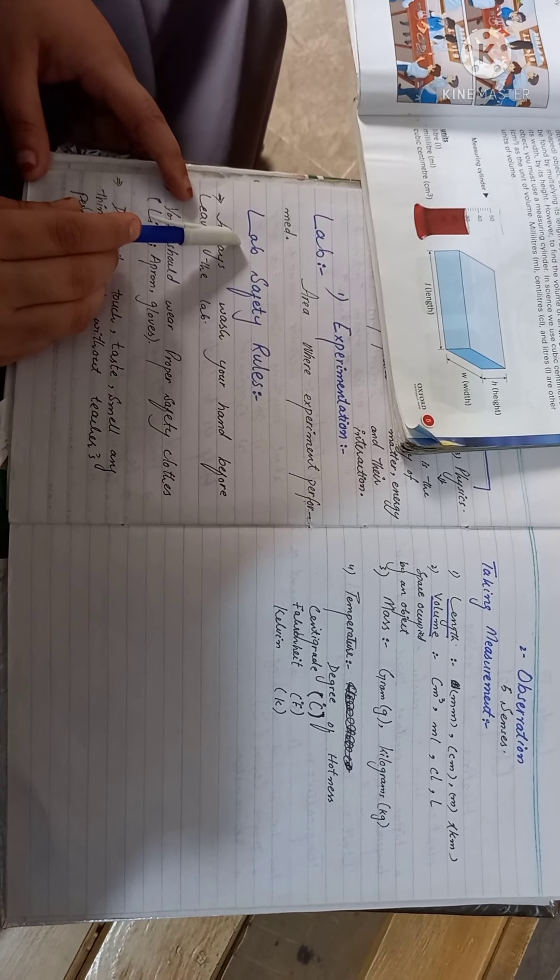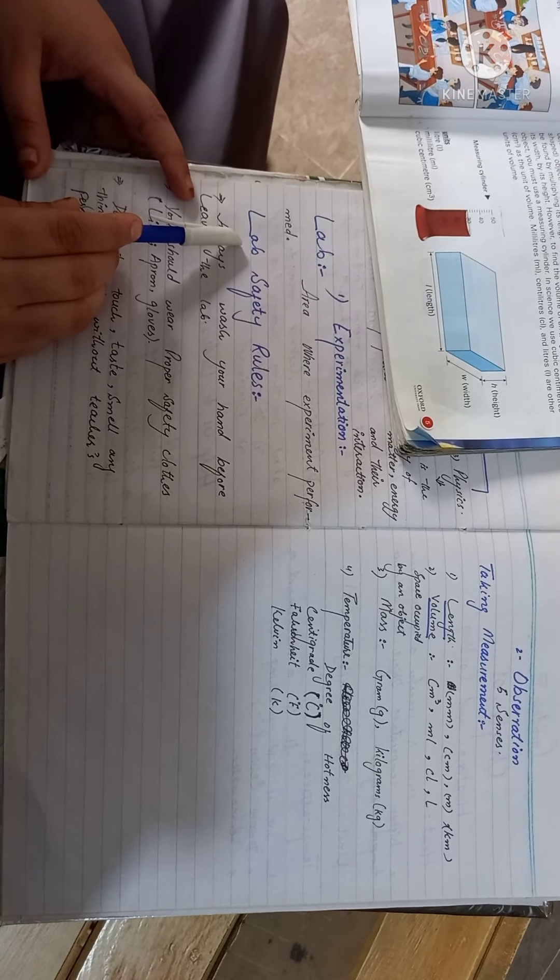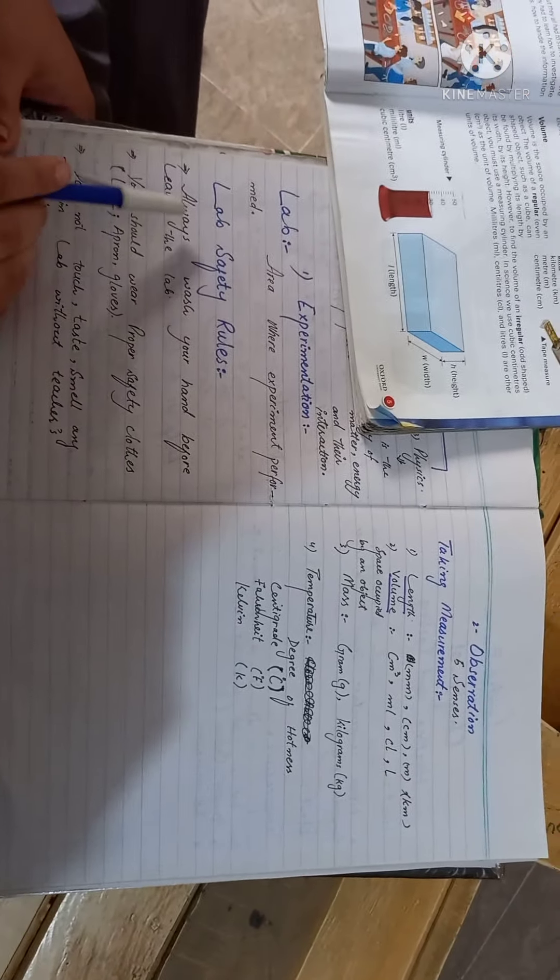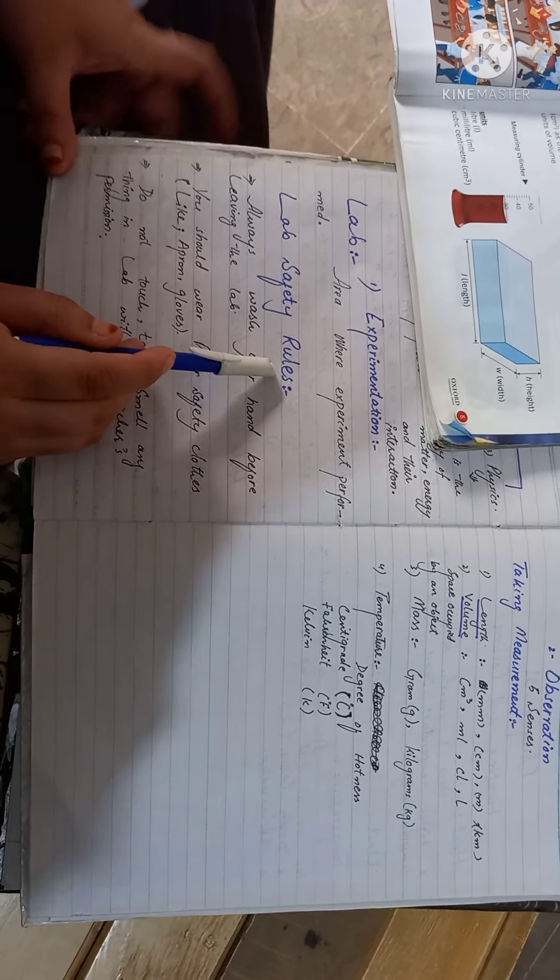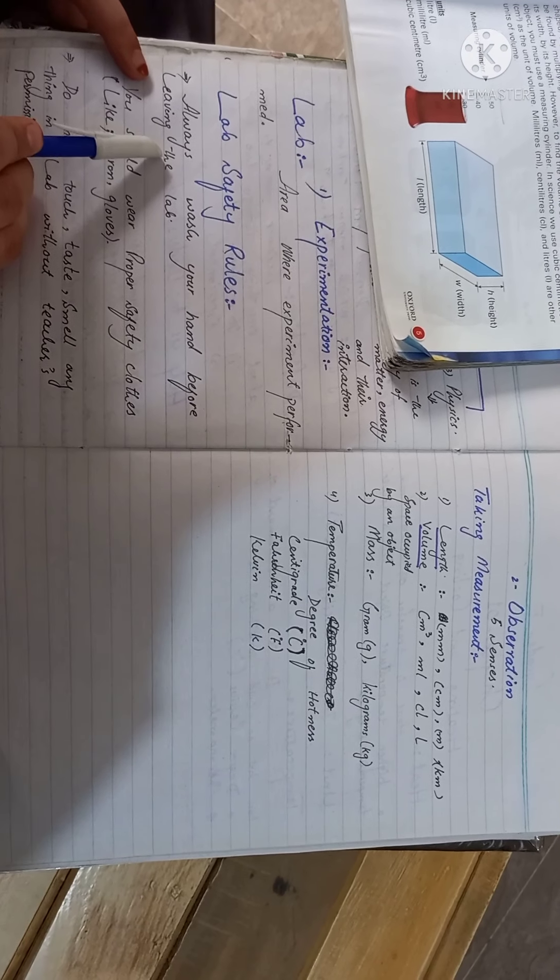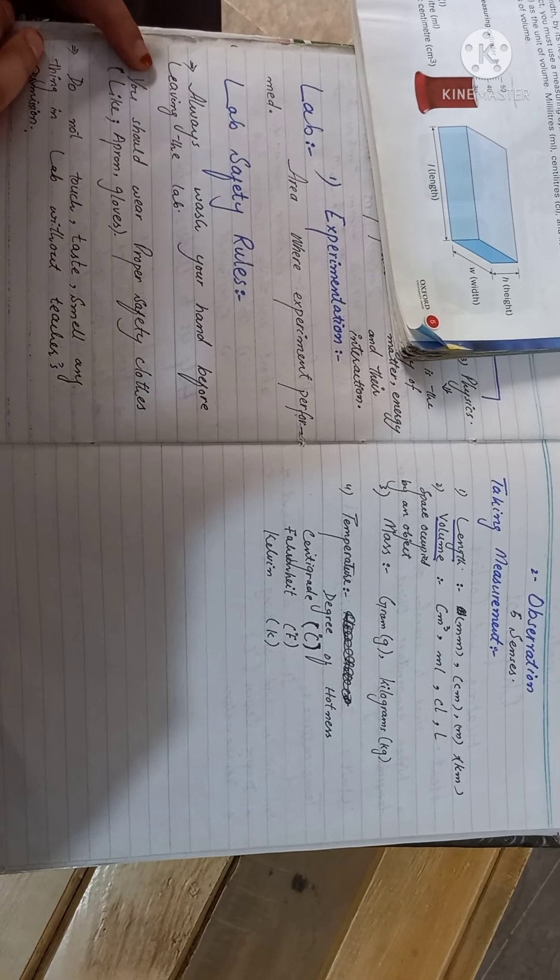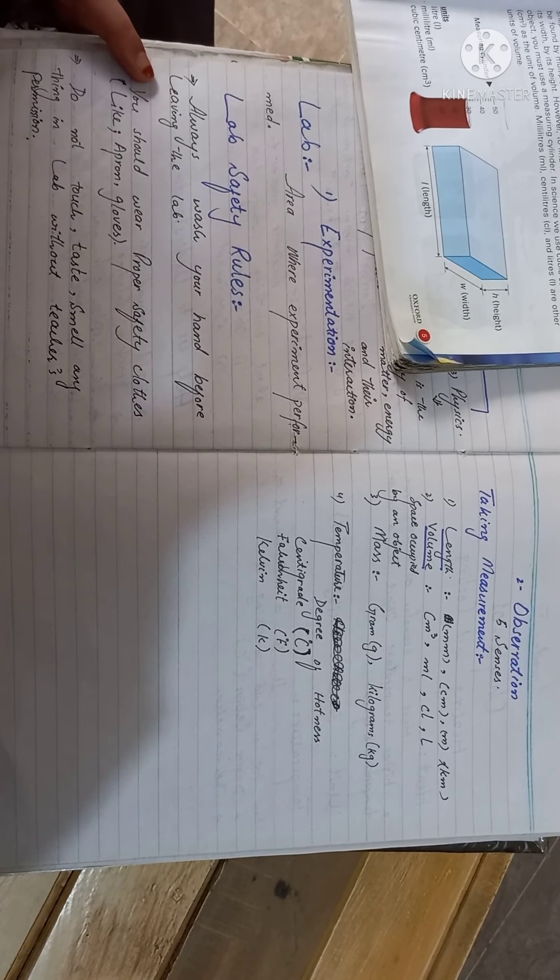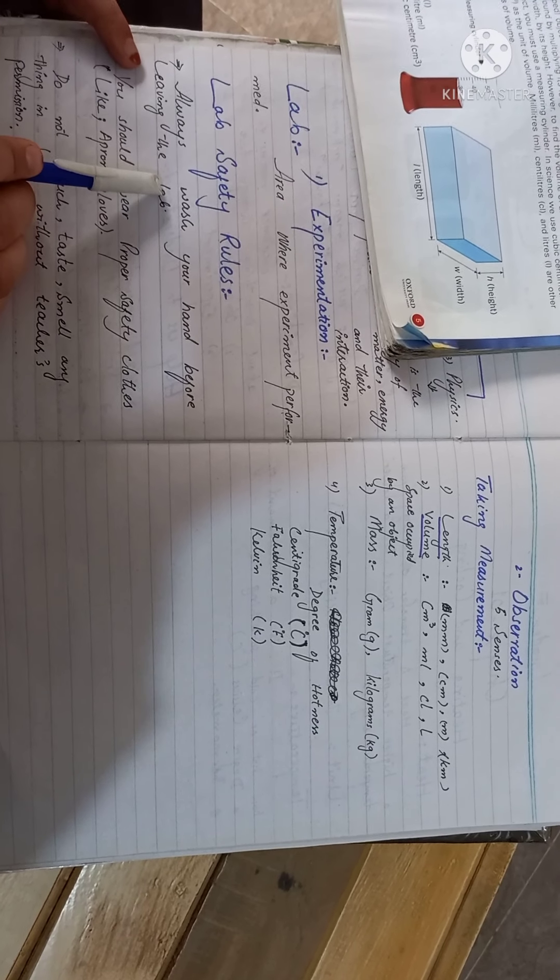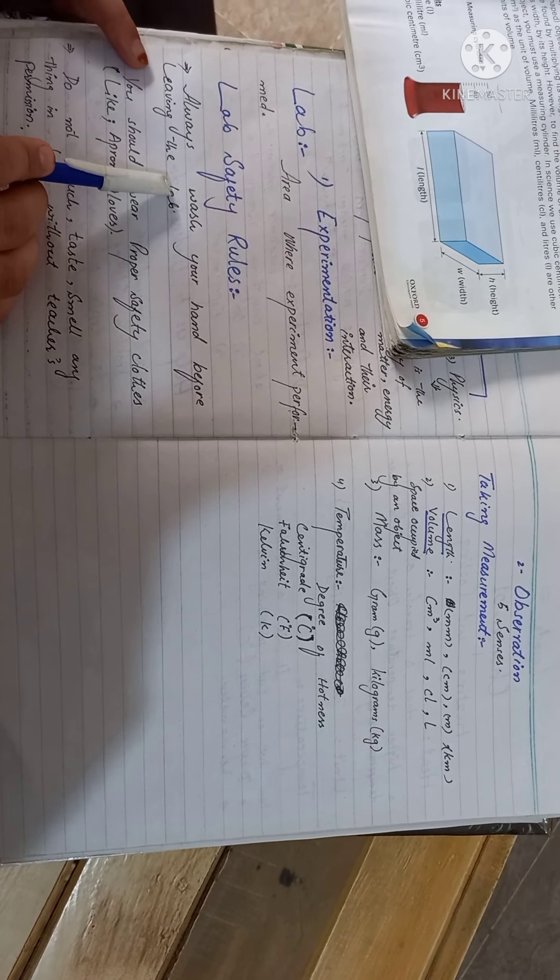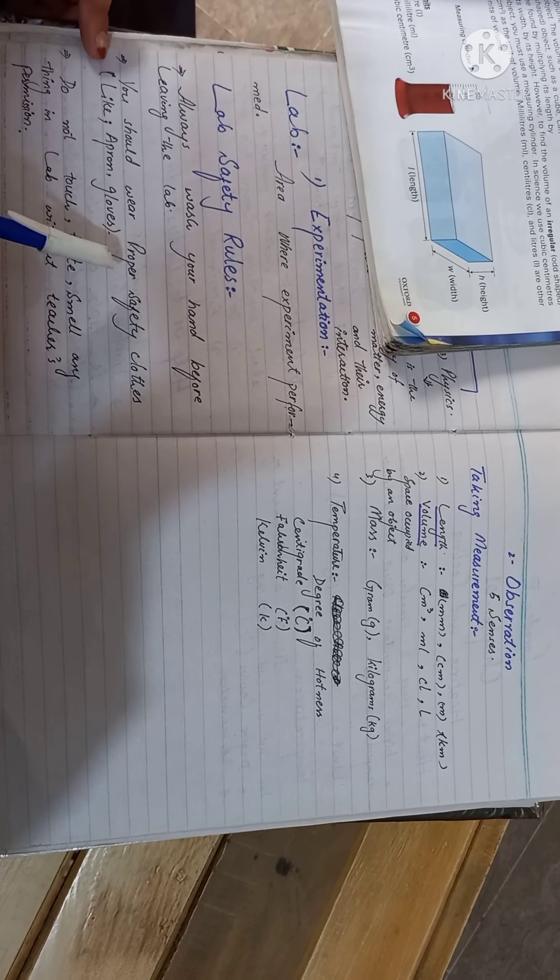Lab safety rules. The first rule is that always wash your hands before leaving the lab. If you do any experiment, you can handle any chemical, but when you start to go to class, you have to wash your hands properly from the lab.